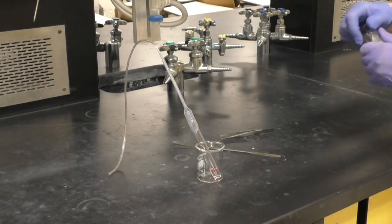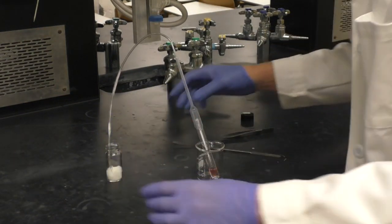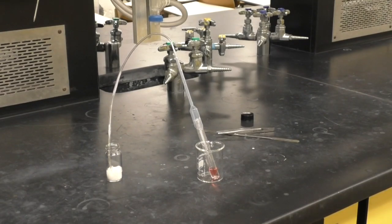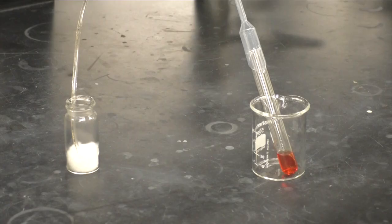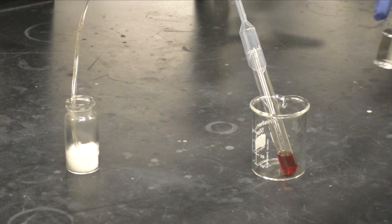Once bubbling begins, connect the test tube to the gas trap and place the end of the Tygon tubing into the saturated cotton ball. Allow the reaction to proceed until all bubbling has stopped. This will take about 15 minutes. You may swirl the reaction to ensure completion.